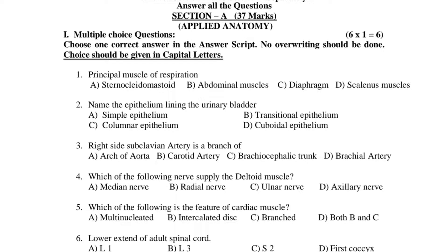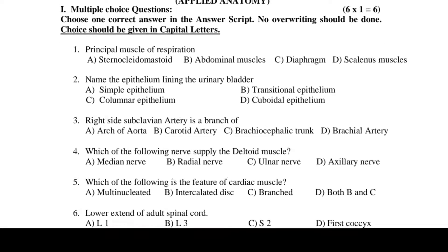Third question: Right side subclavian artery is a branch of — A. Arch of aorta. B. Carotid artery. C. Brachiocephalic trunk. D. Brachial artery.